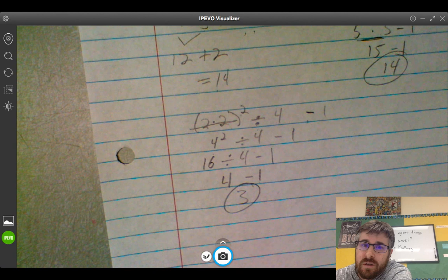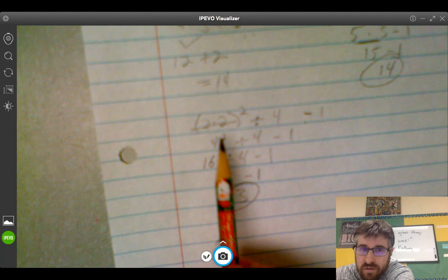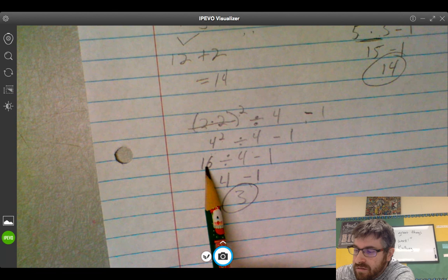2 times 2 is 4. 4 comes out. Parentheses are gone. 4 squared is 16. 16 divided by 4 is 4. 4 minus 1 is 3.